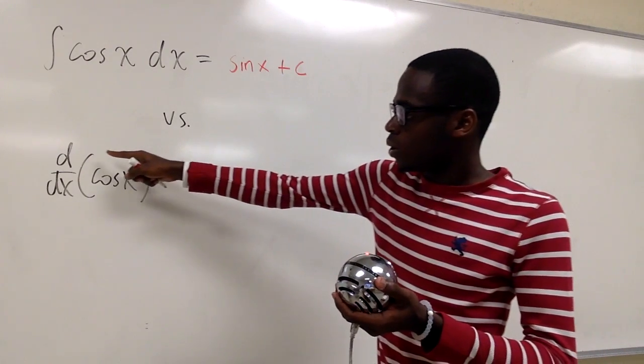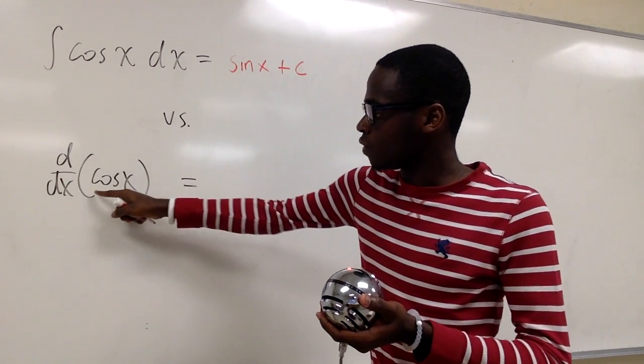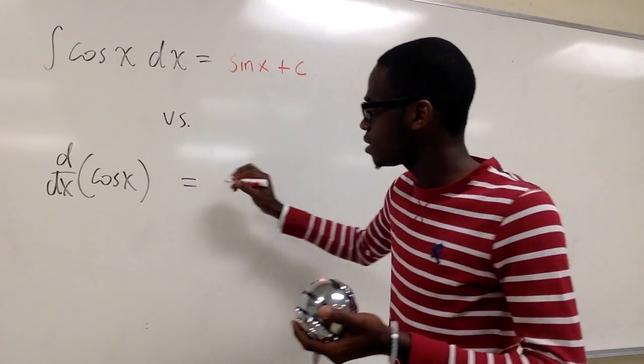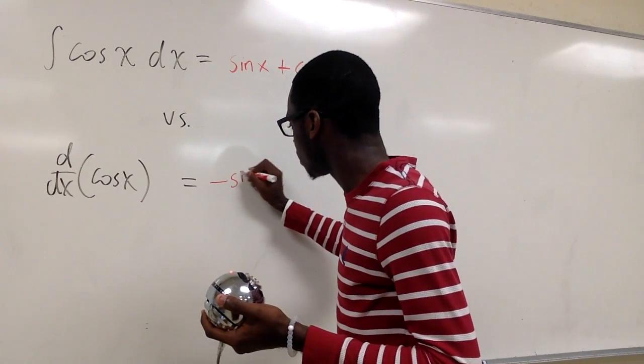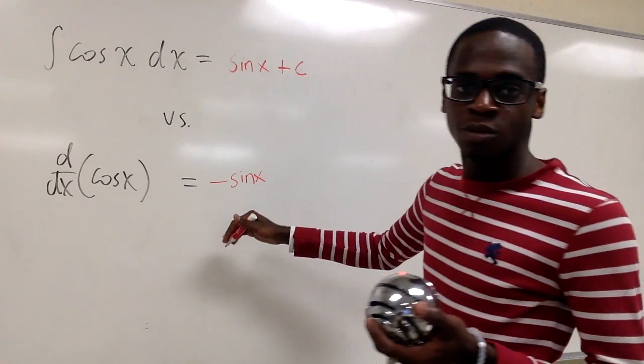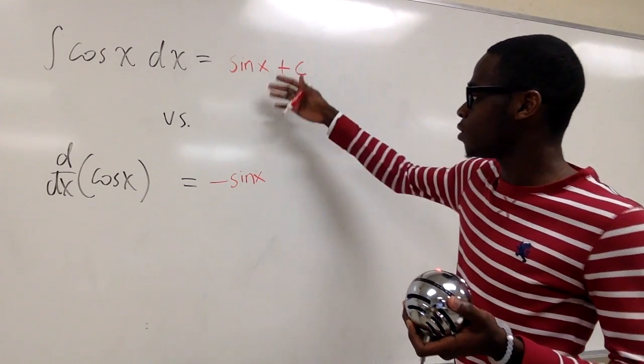Now we want to look at the derivative of cosine x. The derivative of cosine x is negative sine x. And I want you guys to be very careful about this because this is a very common error.